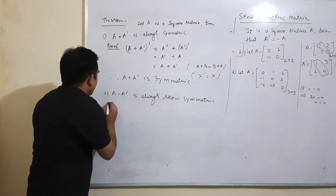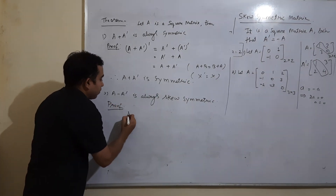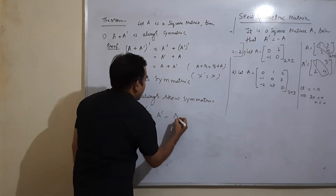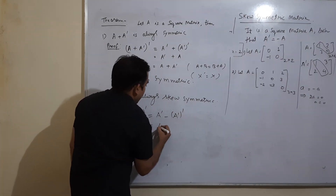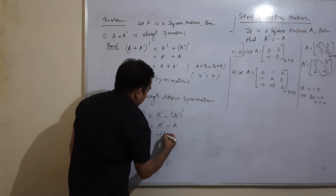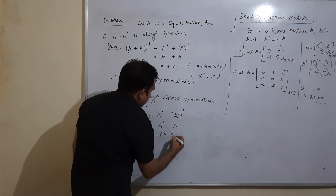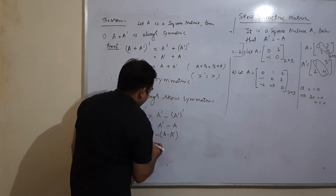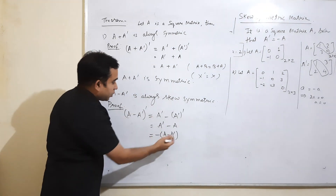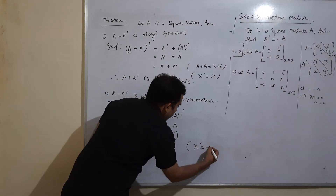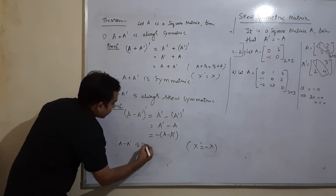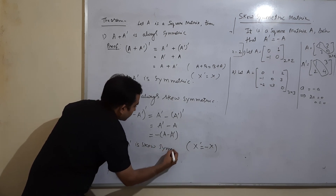Similarly, to prove A − Aᵀ is skew symmetric, take the transpose of (A − Aᵀ): this gives Aᵀ − (Aᵀ)ᵀ = Aᵀ − A. Taking out the minus sign gives −(A − Aᵀ). So (A − Aᵀ)ᵀ = −(A − Aᵀ), which satisfies the definition of skew symmetric. Therefore A − Aᵀ is always skew symmetric.